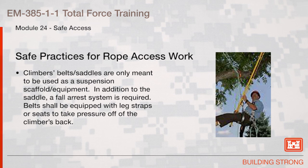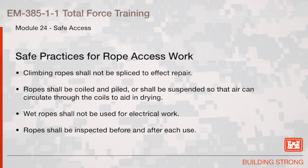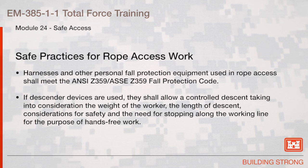Climbers' belts and saddles are only meant to be used as suspension scaffold equipment. In addition to the saddle, a fall arrest system is required. Belts shall be equipped with leg straps or seats to take pressure off of the climber's back. Climbing ropes shall not be spliced to effect repair. Ropes shall be coiled and piled or suspended so that air can circulate through the coils to aid in drying. Wet ropes shall not be used for electrical work. Ropes shall be inspected before and after each use. Harnesses and other personal fall protection equipment used in rope access shall meet the ANSI ASSE Z359 Fall Protection Code.